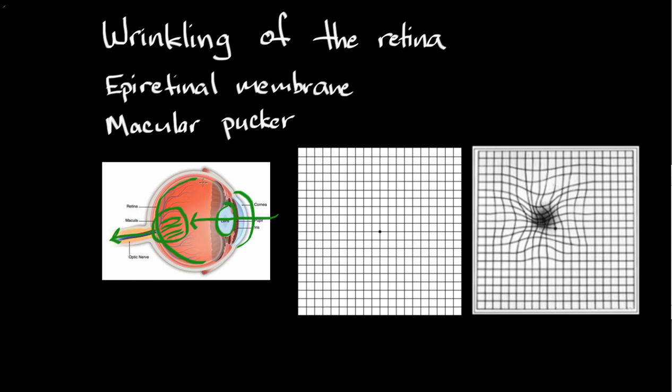So a patient who has a normal, healthy macula will see these lines as up and down and left and right, as shown in this grid right in the middle of the screen. On the right side here, I'll put here normal.